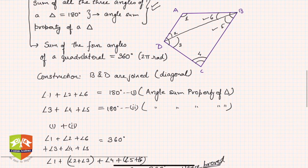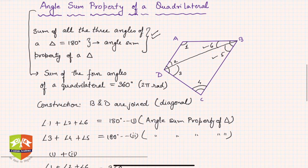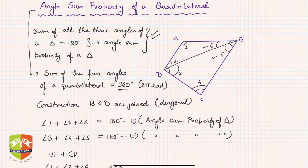So A, B, C, and D all put together is 360 degrees — hence proved. The angle sum property of a quadrilateral says that the sum of all interior angles of a quadrilateral equals 360 degrees. Remember this theorem because we are going to use it again and again, and after this session we will solve some problems based on this property.